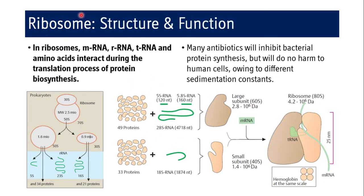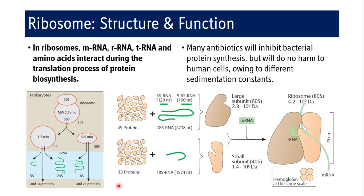As far as the structure of the ribosome is concerned, three types of RNA — mRNA, rRNA, and tRNA — along with amino acids brought by tRNA, interact together and translation occurs, leading to protein biosynthesis. The sedimentation coefficients of the subunits of eukaryotic and prokaryotic ribosomes do not match except for 5S. Because of this difference, we can safely manufacture antibiotics targeted against prokaryotic subunits, and since there is no similarity with eukaryotic cells, inhibition of human protein biosynthesis will not be seen.